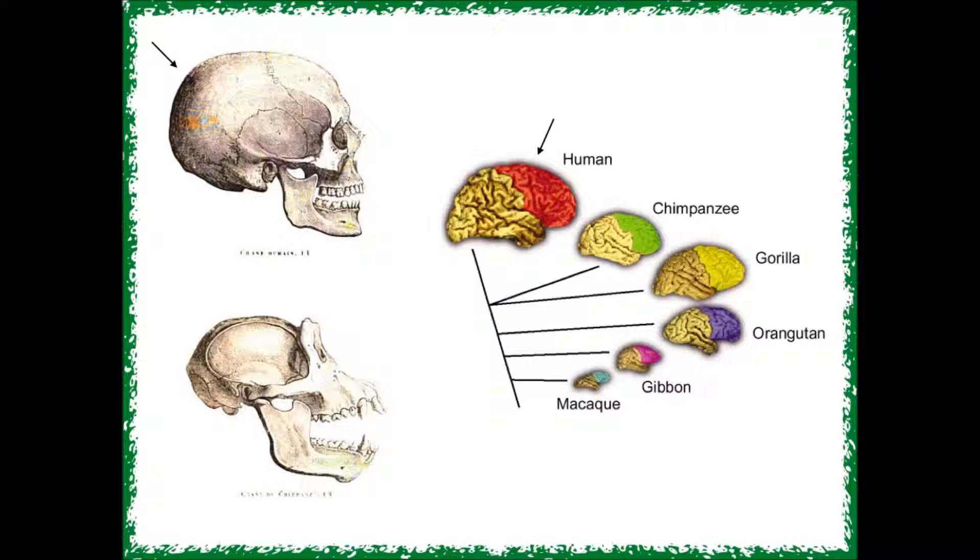As you can see, the human brain is the biggest in the picture. The red area is a part of the brain called the prefrontal cortex. Scientists have shown that this part of the brain is one of the things that makes us so smart.